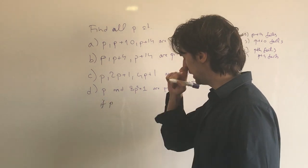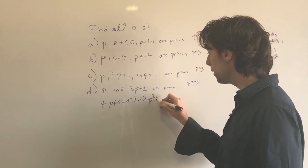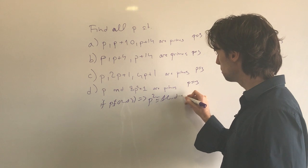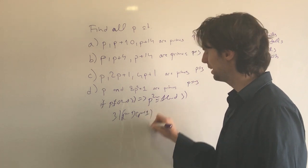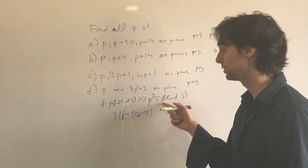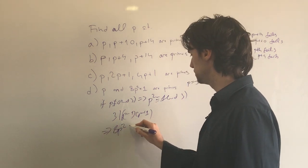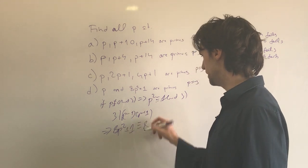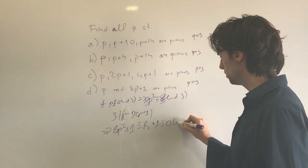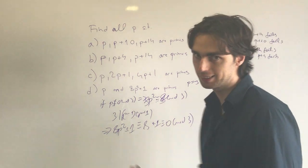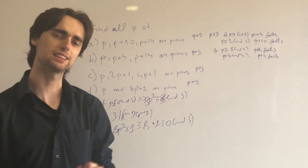Now, if P is not congruent to 0 modulo 3, then P squared is congruent to 1 modulo 3 — because 3 divides P minus 1 times P plus 1. This implies that 8P squared plus 1 is congruent to 8 times 1 plus 1 = 9, which is 0 modulo 3. So 8P squared plus 1 is divisible by 3 and greater than 3, hence not prime. Therefore P equals 3 is the only solution.